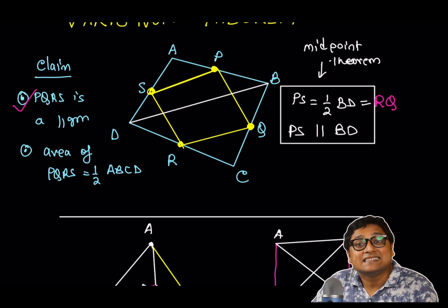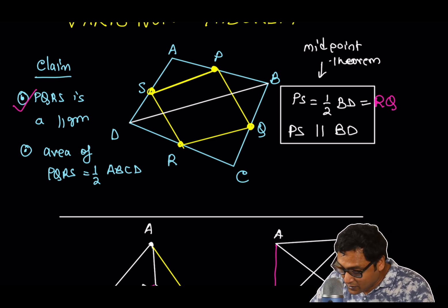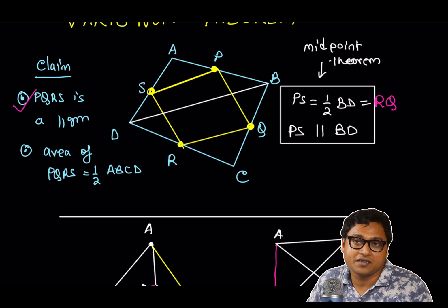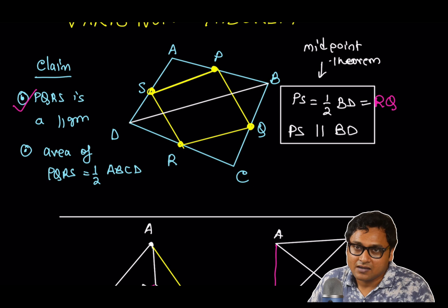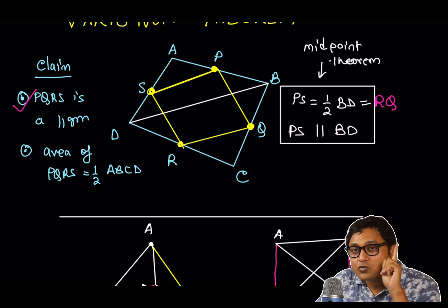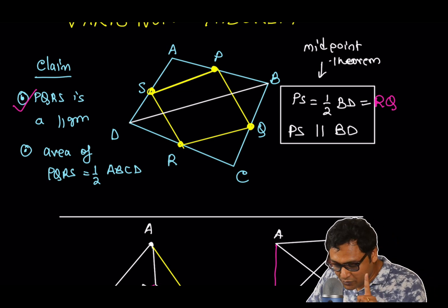Now, let's look at the second claim. What is the second claim? Well, the second claim is this, that the area of PQRS is half of the area of ABCD. Now, I will just do one step. You have to do four steps. I will do one step. What I'll do is, I'll just find out the area of this little piece, APS.